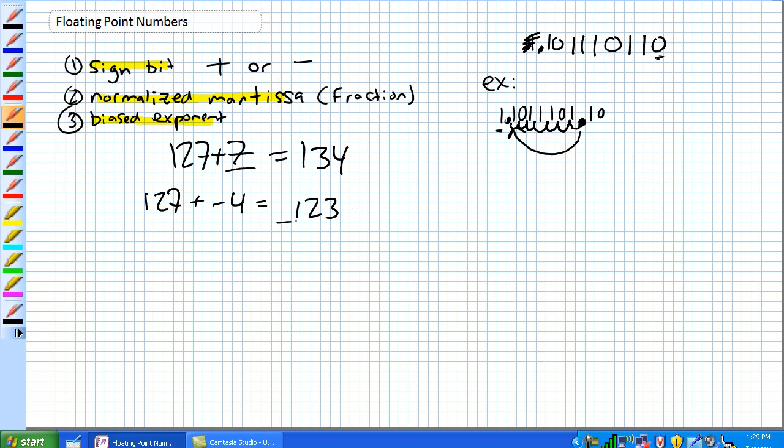Just pretend you had a negative 4 as your actual exponent. So 127 plus negative 4 is equal to 123. See? Look, mom, no sign bit. So basically, you don't have to worry about that. You can represent a negative exponent with a biased exponent.